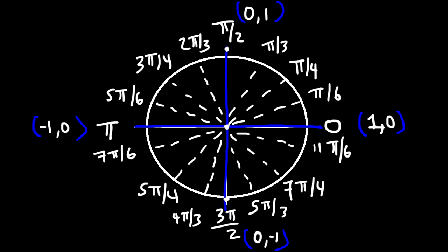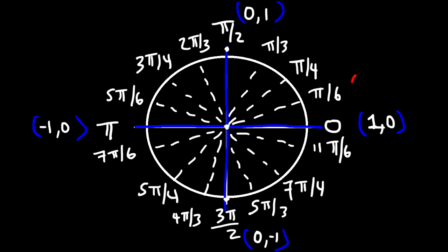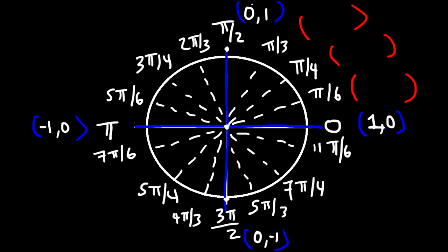Now let's focus on Quadrant 1, located in the upper right. Quadrant 2 is in the upper left, Quadrant 3 is at the bottom left, and Quadrant 4 is in the lower right. In Quadrant 1, both x and y are positive. For the angles π/3, π/4, and π/6, let's look at the x-values — we increase from 0 to 1: so we get √1/2 (which is 1/2), then √2/2, √3/2, and √4/2, which equals 1.